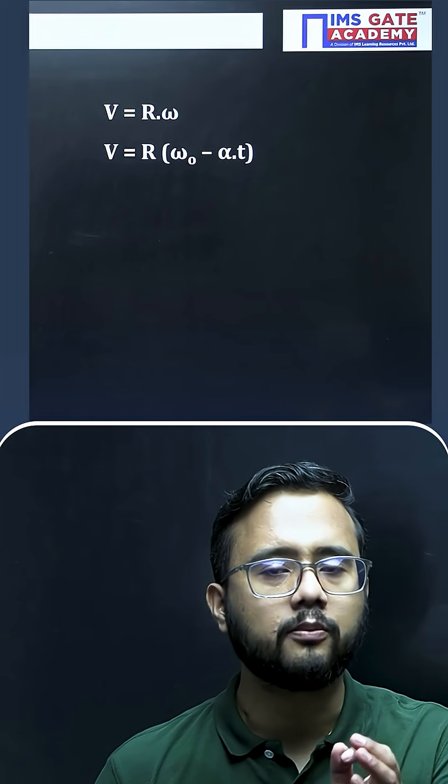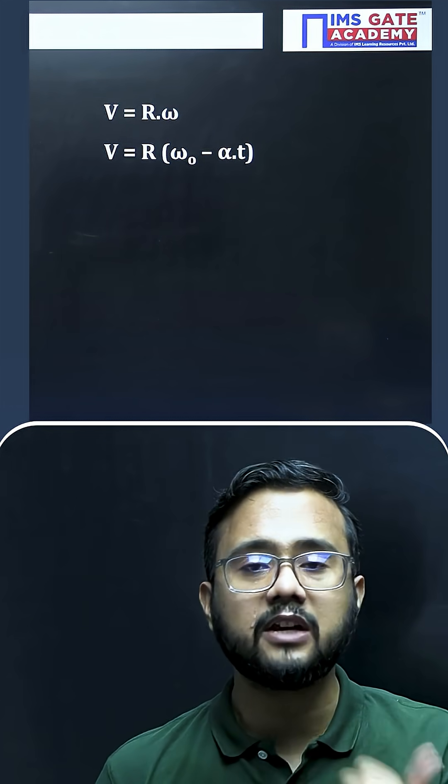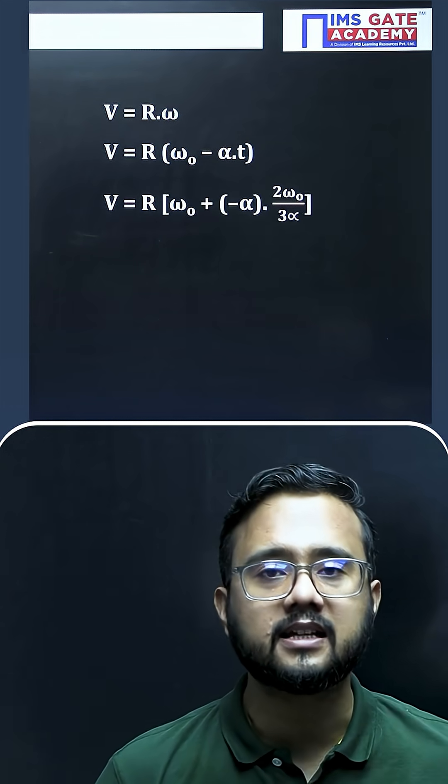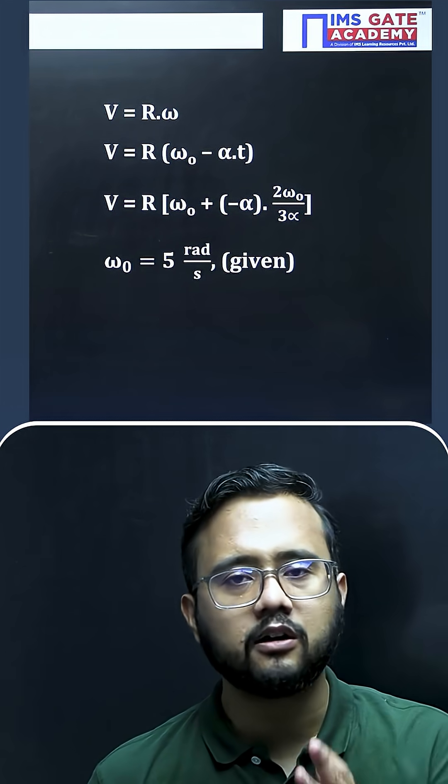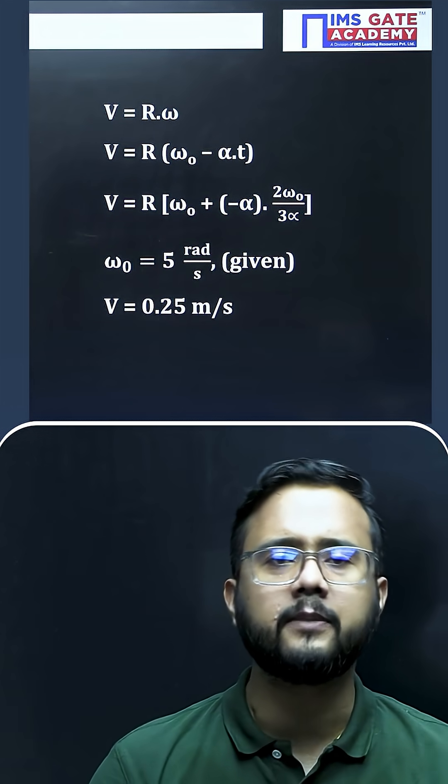So minus alpha will come. Now t value we will substitute here and alpha will get cancelled out. Now putting all those values, as omega naught 5 radian per second is already given, we'll get the final answer as 0.25 meter per second.